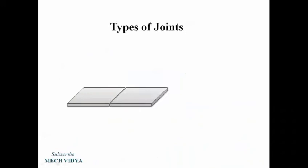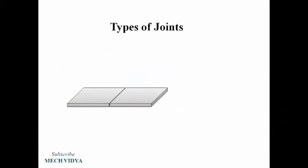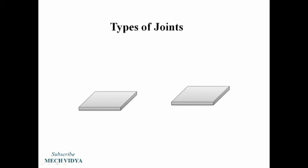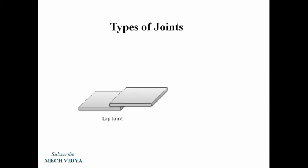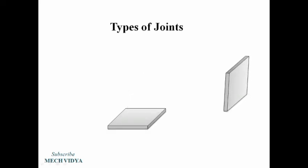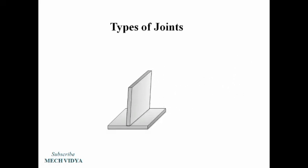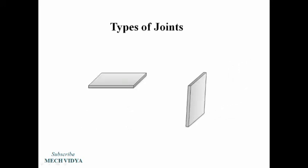Now let us see in how many different ways we can join two plates. If the two plates are joined sideways such that they lie on the same plane, this is called a butt joint. If the plates are welded one over the other, it is called a lap joint. If the plates are joined in a T-shape, it is called a T joint — they resemble the English letter T.